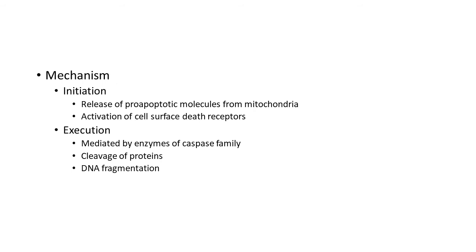Coming to the mechanism of apoptosis: it is divided into two phases — initiation and execution. Initiation, or nudging the cell into suicide mode, happens when there is withdrawal of cell-surviving signals like hormones or growth factors, or due to some cell injury agent like heat or radiation. This initiation can take one of two pathways: the intrinsic or mitochondrial pathway, or the extrinsic or cell-surface death receptor pathway.